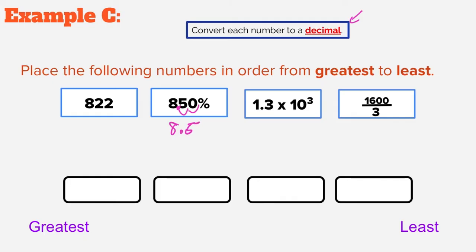Our next number is 1.3 times 10 to the third power. The positive exponent tells us how many times to move our decimal — three places to the right — giving us 1,300. The last number is 1,600 divided by 3, or 1,600 thirds. Type that into the decimals calculator and you get 533.3 repeating.